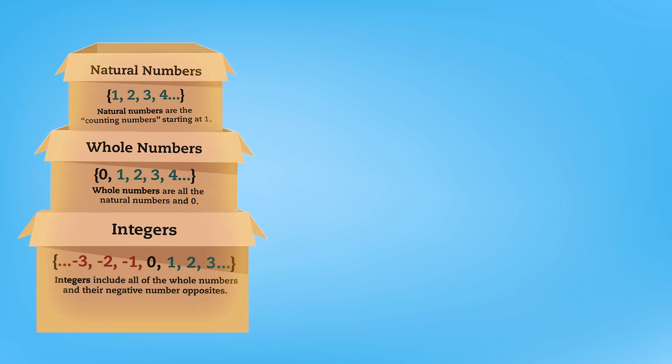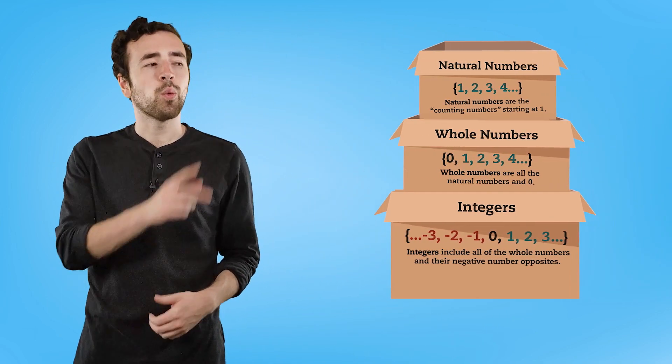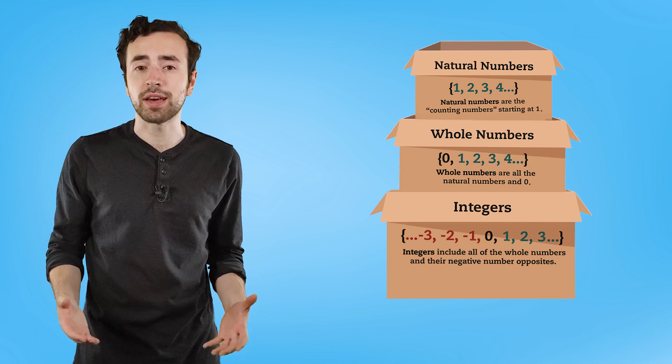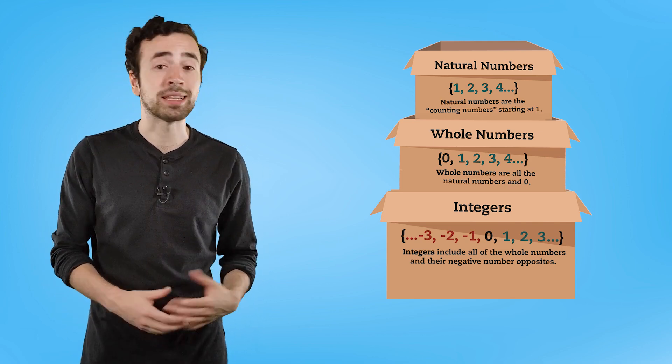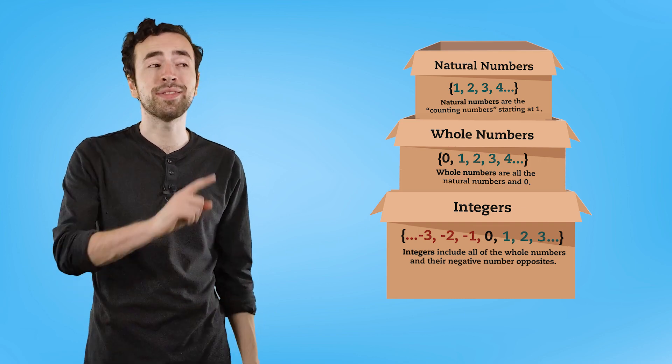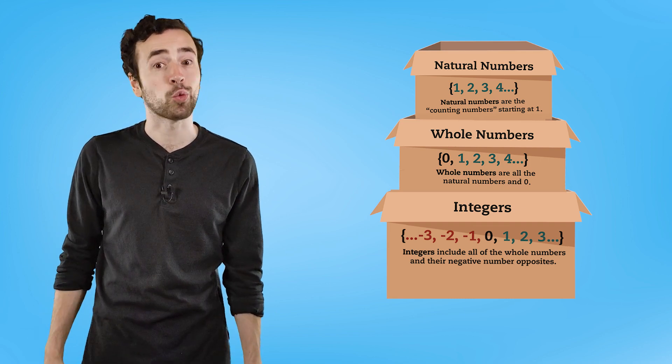Excellent categorization. Now find problem numbers four through seven on that same page in your PDF. Pause the video here to try categorizing each of those numbers. Welcome back. How'd you do? 124 and 57 should both be in the natural numbers box. Negative three and negative 21 should both be in the integers box. Great work.